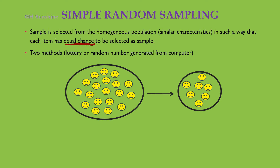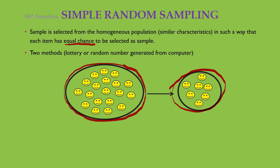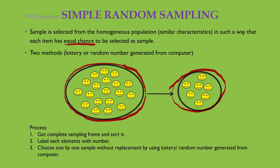In simple random sampling, the population is homogeneous and all items have equal chance to be selected — no bias. The process requires a complete sampling frame, labeling each element with a number, then choosing samples one by one without replacement using the lottery method or random number method.